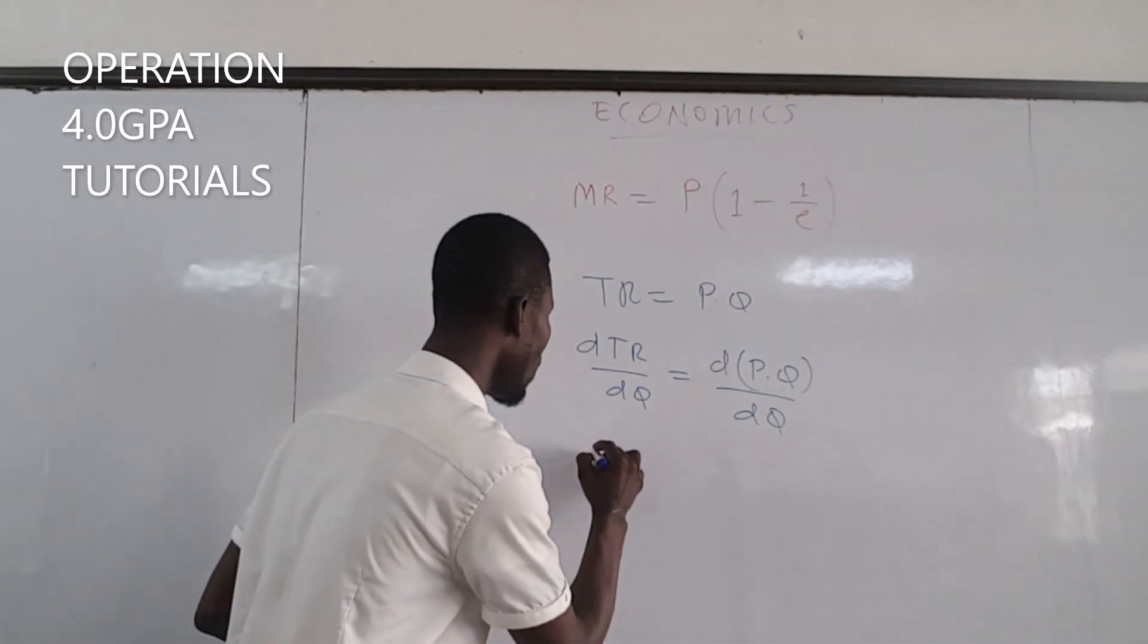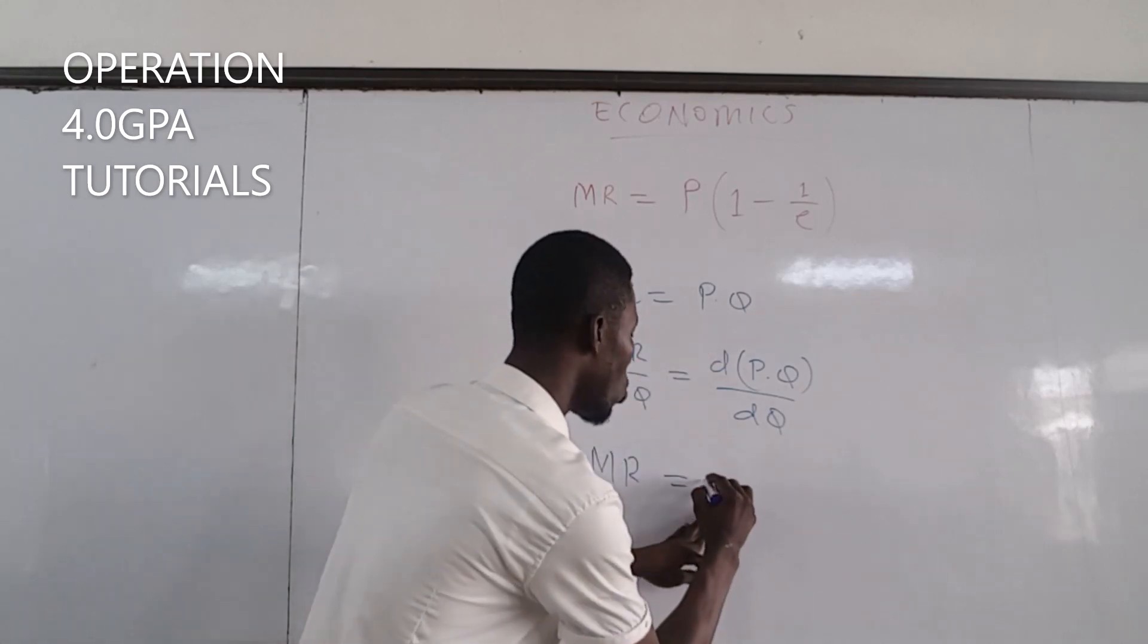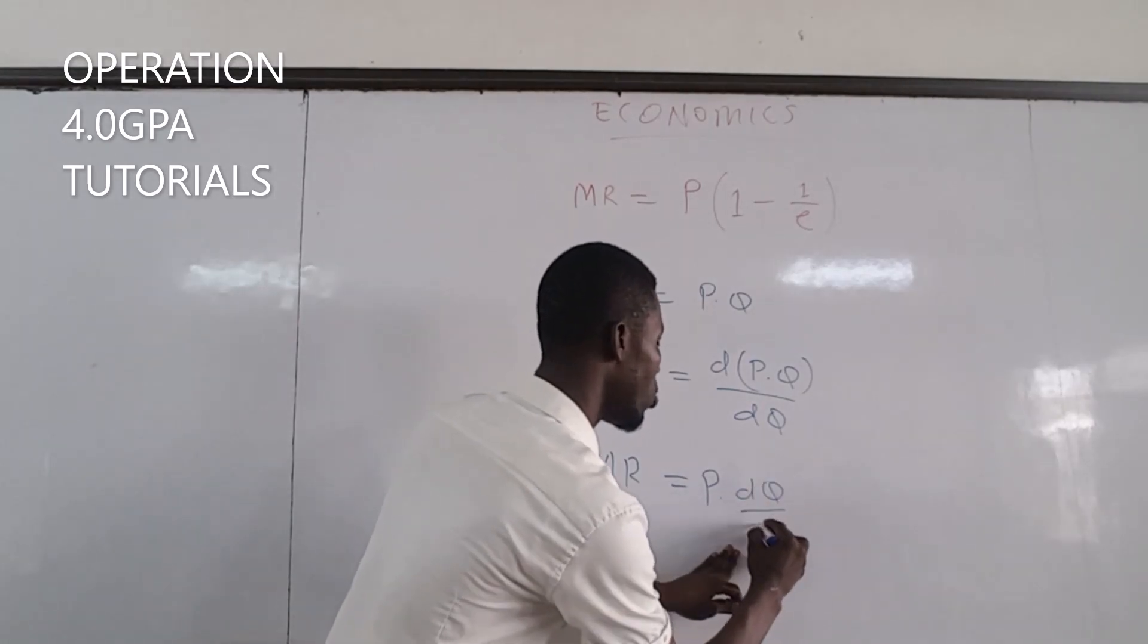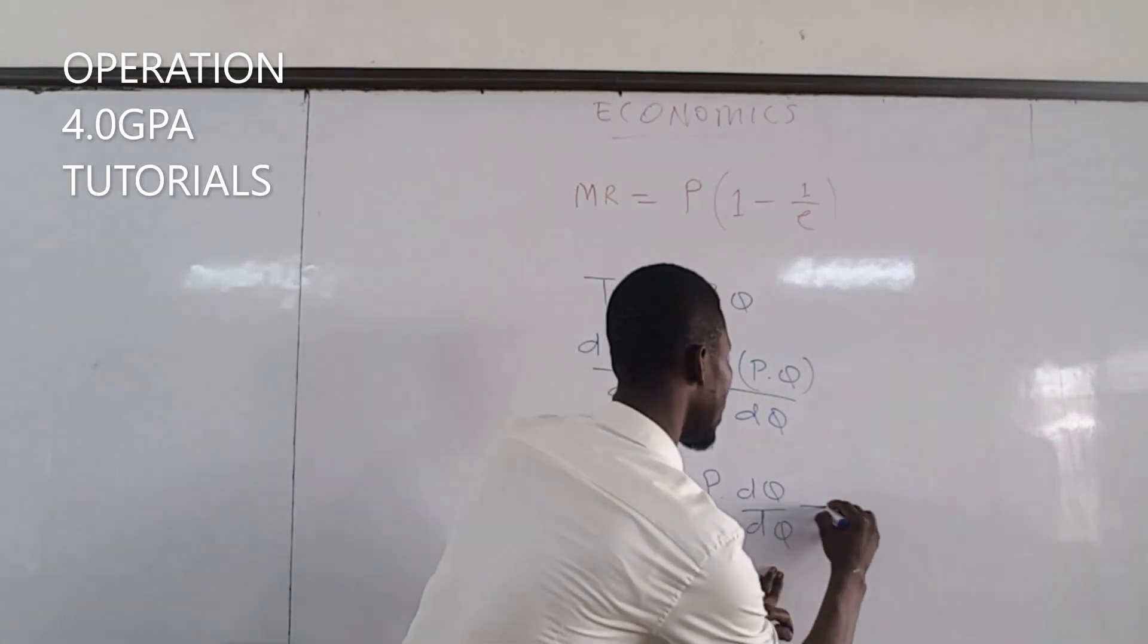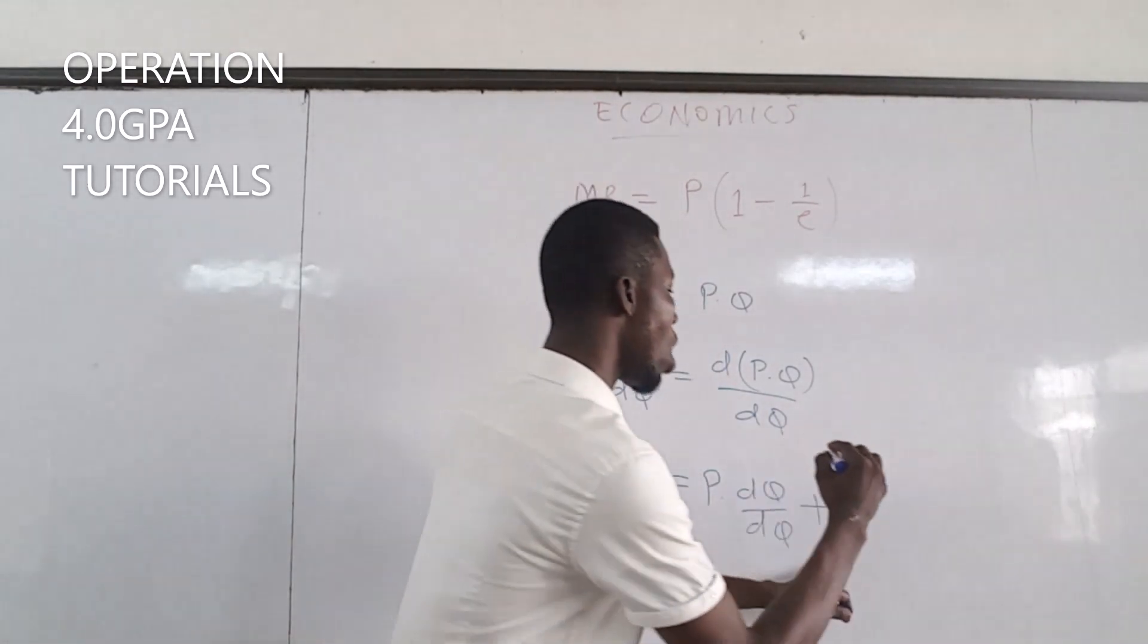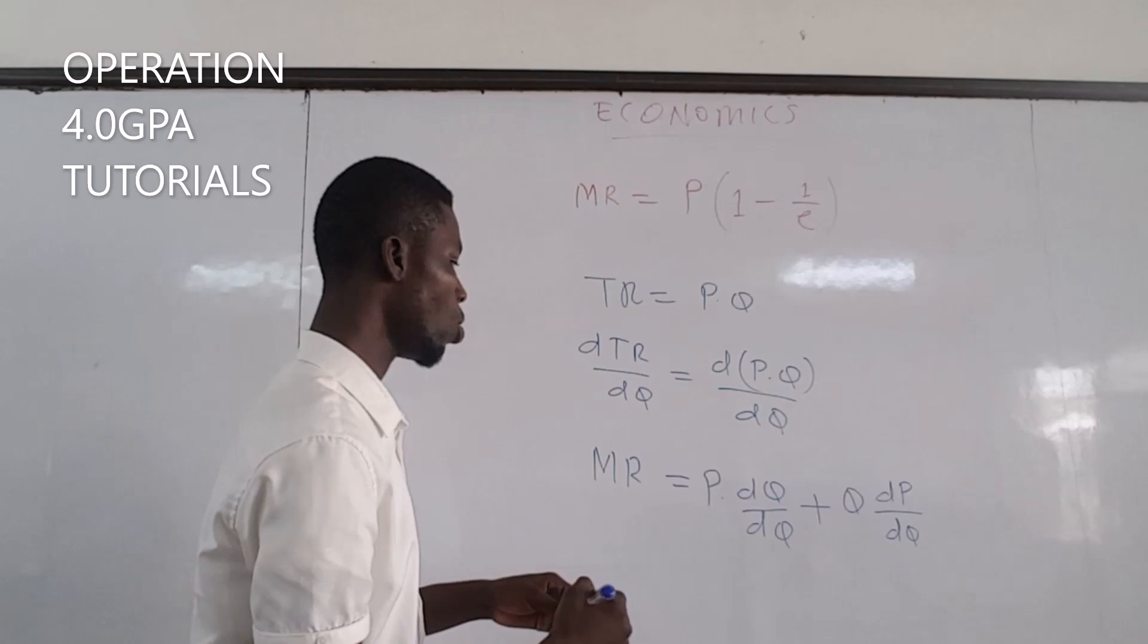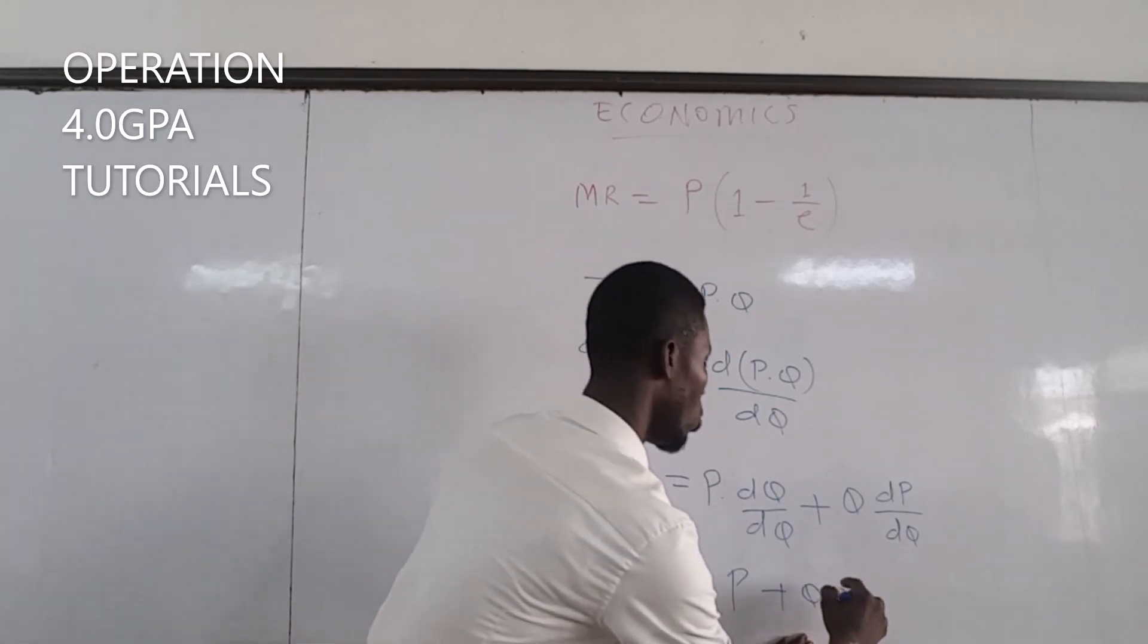So differentiating this, we have our marginal revenue which is equal to: we can hold price first, then we differentiate the quantity. Differentiating the quantity with respect to the quantity, we have dQ over dQ. Plus, we hold Q, we differentiate the price with respect to the quantity. We can cancel out and have P plus Q times dP over dQ.